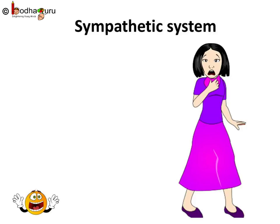Certain nerves of the autonomous nervous system initiate fight or flight responses — that is, the way in which the body reacts to stress or danger. These nerves form the sympathetic nervous system. The sympathetic system is formed by the chain of ganglia on either sides of the vertebral column and the associated nerves.